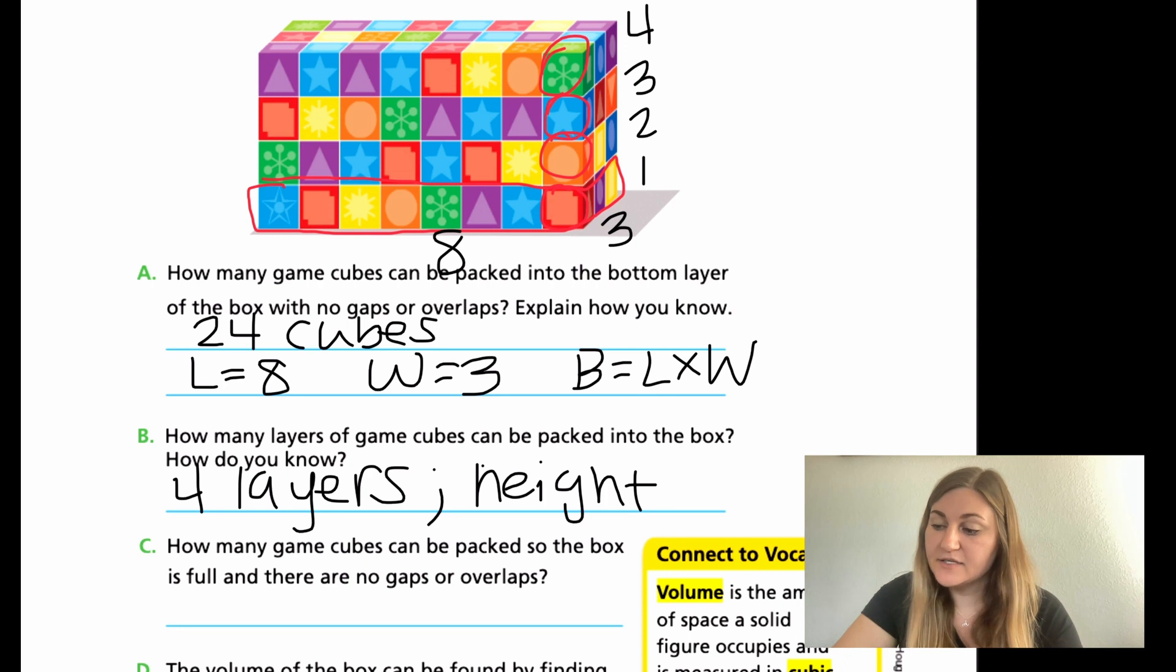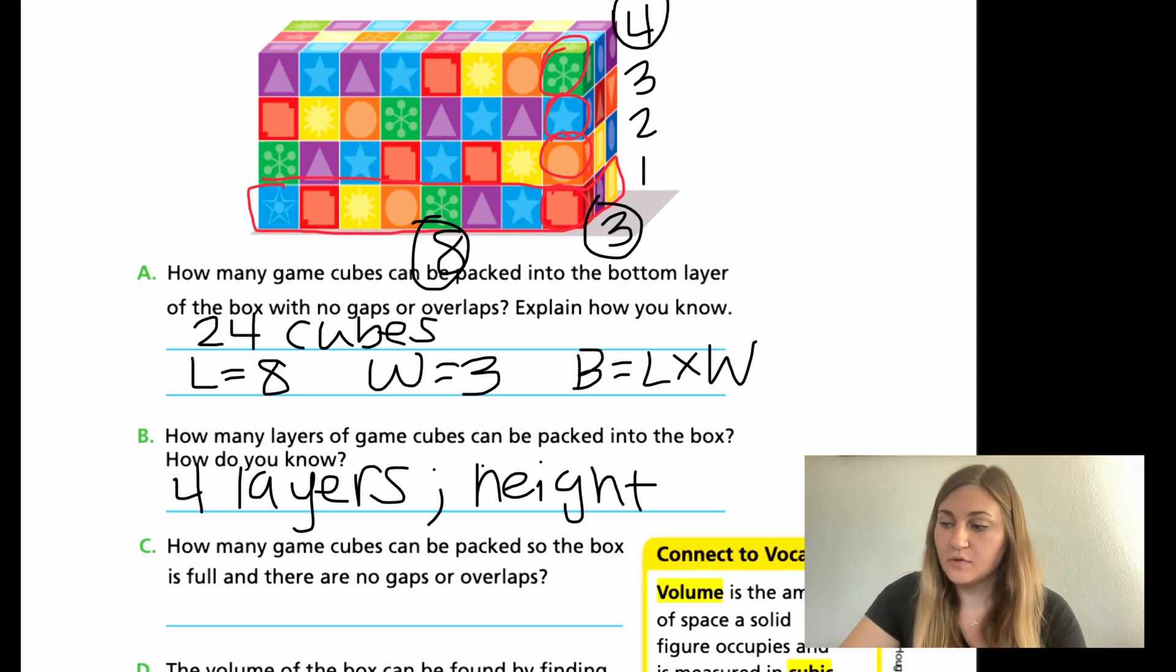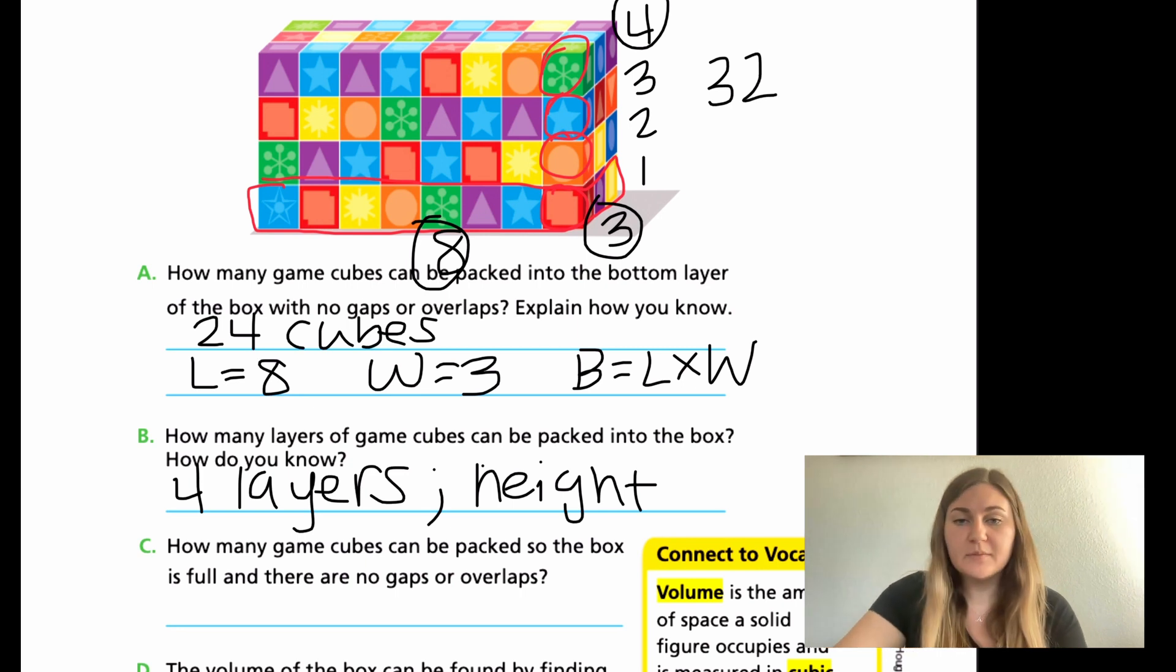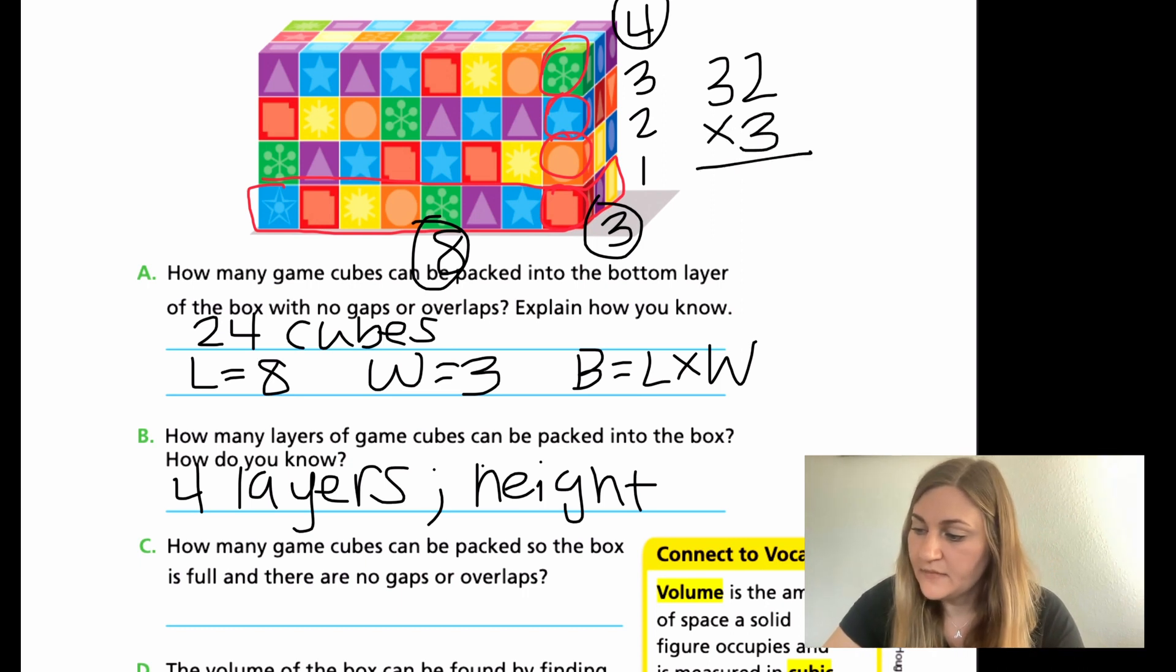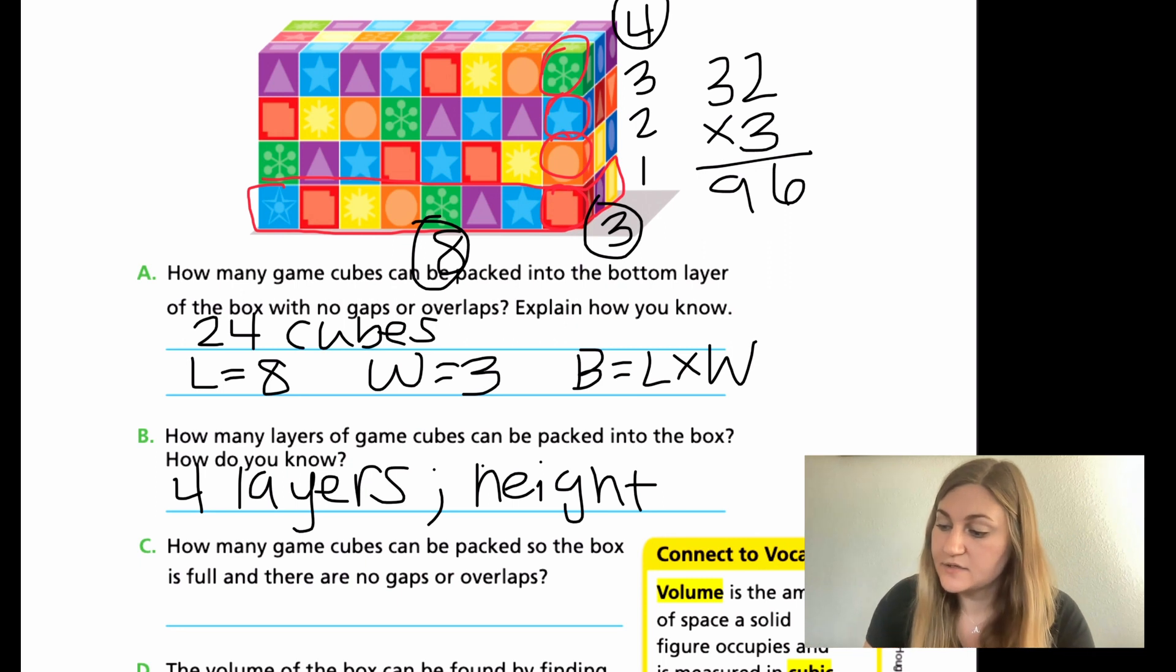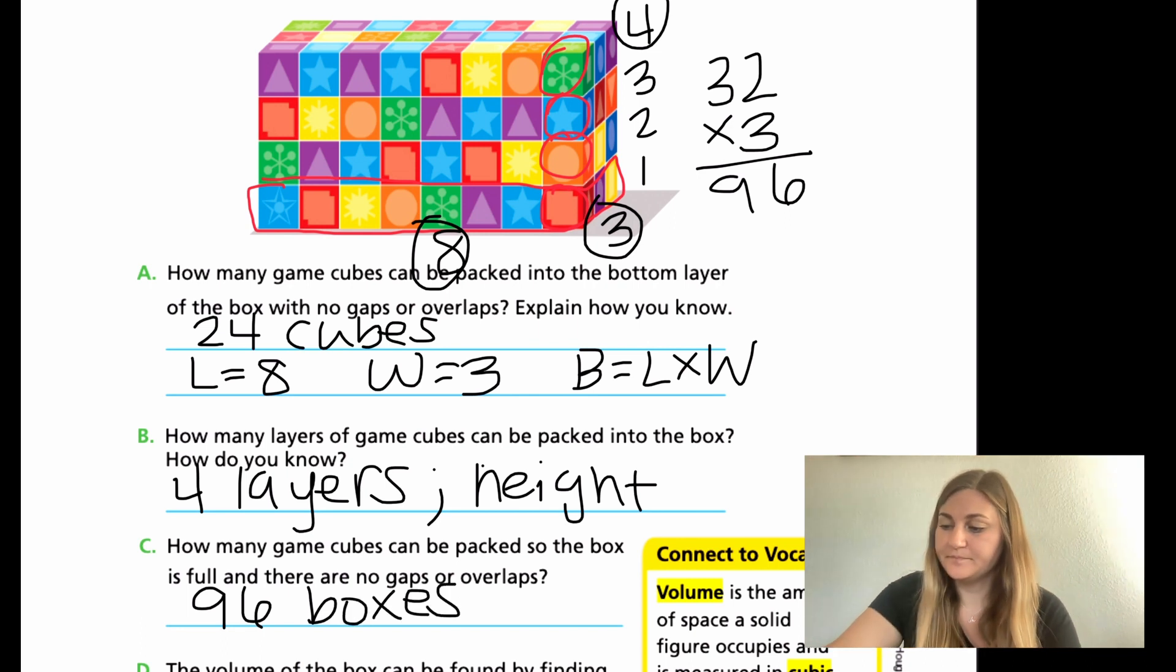For C, how many game cubes can be packed so the box is full and there are no gaps or overlaps? That really is asking for the volume, so the length times the width times the height. So I have 8, 3, and 4. Eight is my length, 3 is my width, and 4 is my height. So I need to multiply those all out together. I'm going to take my biggest numbers and do 8 times 4, and I know that that is one of my multiplication facts, 32. So once I have one of my facts, then I have to just multiply it by the smallest number. So 32 times 3, 3 times 2 is 6 and 3 times 3 is 9. So how many game cubes can be packed? I'm going to say 96 boxes or cubes.